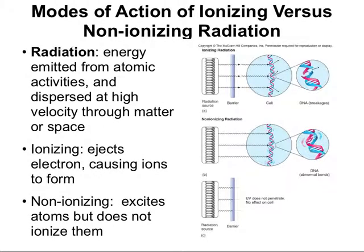Now let's look at some other means of energy, like radiation as antimicrobial agents. Radiation exists in many different states, but as far as microbial control is concerned, we're only really interested in gamma rays, x-rays, and UV radiation. Radiation is when we have energy emitted from atomic activities and dispersed at high velocity through matter or space. It can either result in actually ejecting electrons, removing them from the source, or just exciting the atoms without removing electrons.